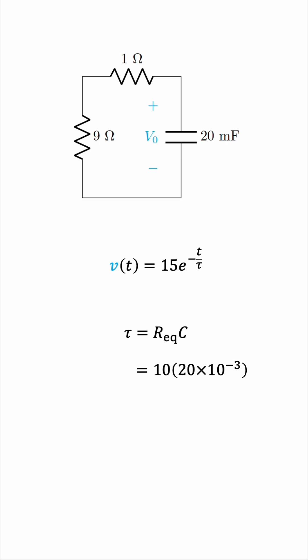So tau is 10, the equivalent resistance, times the capacitance, which is 20 millifarads, and this works out to be 0.2 seconds. So tau is 0.2, and we can replace that in the equation for the voltage, resulting in 15e to the negative 5t.